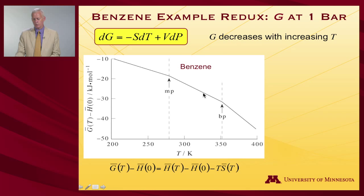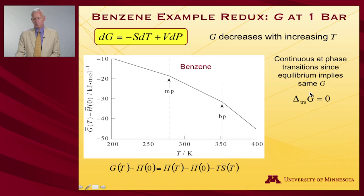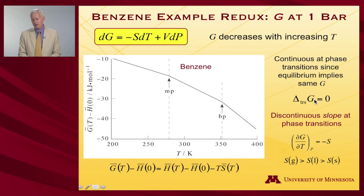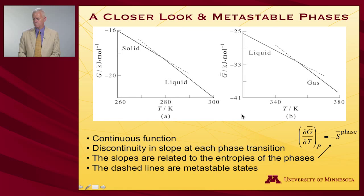The free energy continues to decrease with a larger slope because S is a larger number. Then at the boiling point, we go from the liquid to the gas and continue to decrease even more. The curve itself has to be continuous at the phase transitions because the two phases are in equilibrium and have the same free energy. What's discontinuous is the slopes, because it is the partial derivative of G with respect to T that tells us the entropy — giving rise to this increasingly steeply decreasing free energy with increasing temperature.